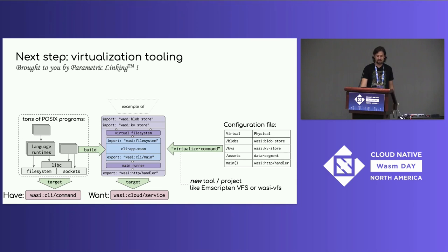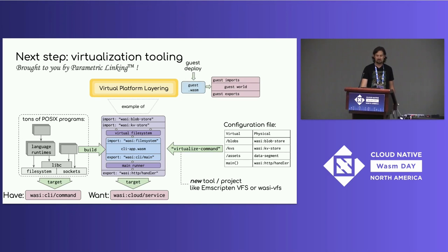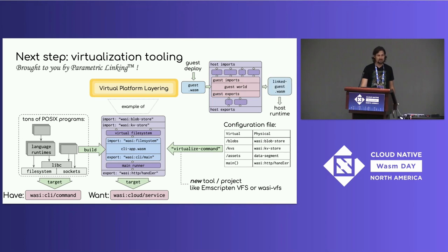This is an example of a more general pattern called virtual platform layering: you define a guest world — what you expose to customers, who deploy components targeting it — and then as an implementation detail, you have a host world with a totally different set of imports. You implement the guest world in terms of the host world, and when you link this all together with parametric linking, it can run on a host runtime that only knows about the host world. This reduces the size of the trusted computing base and decouples the guest world from the host world, allowing you to evolve the host world as your platform evolves. Even wilder, this host world itself could be a guest world of some platform layer below — which is what you see with large enterprises having separate application and platform teams, or companies building platforms layered on top of other companies' platforms.